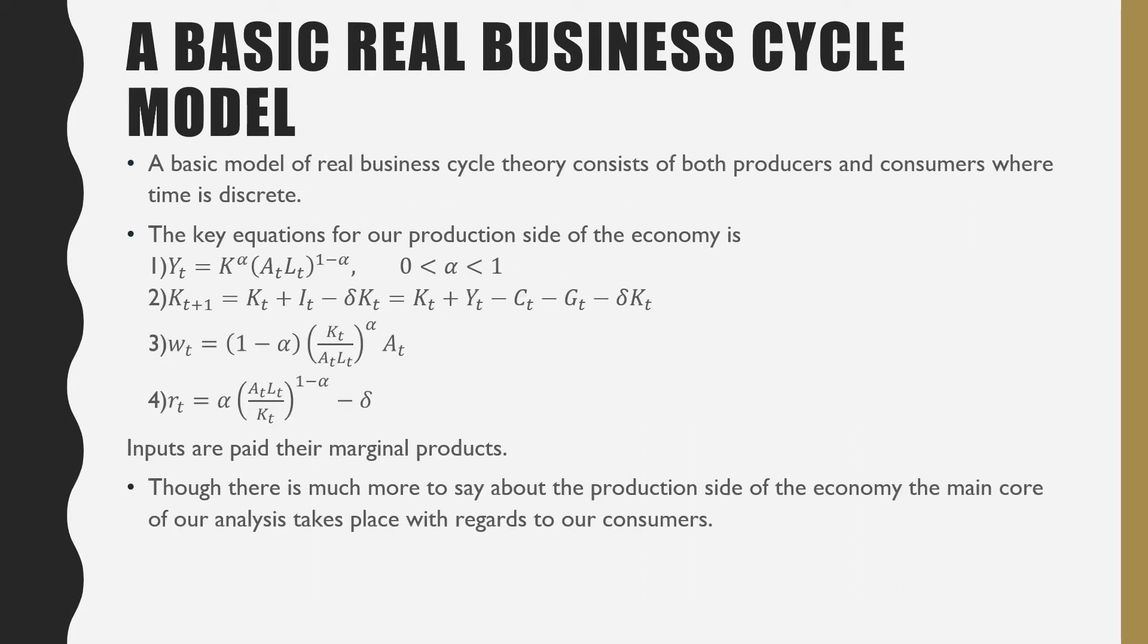The basic model of real business cycle theory consists of both producers and consumers, where time is discrete, meaning it moves in period 1, period 2, period 3. The key equations for our production side of the economy are: the first equation, which is our production function; our second equation is our capital accumulation equation; our third equation is our wages paid to labor; and our fourth equation is the rental rate of capital.